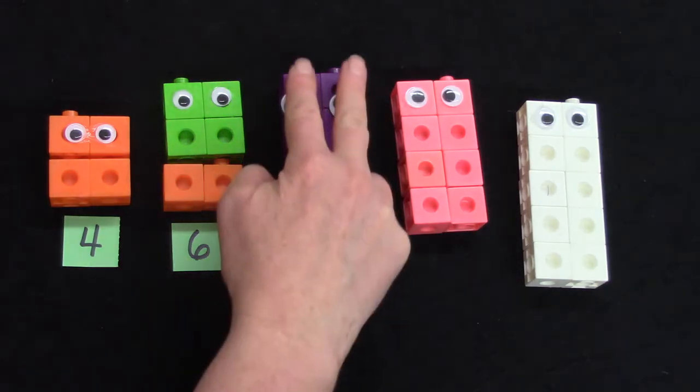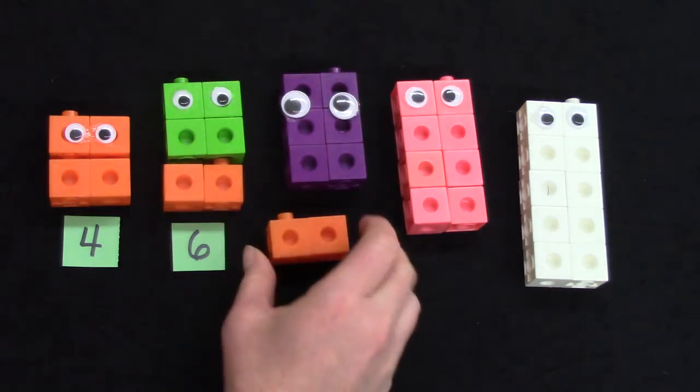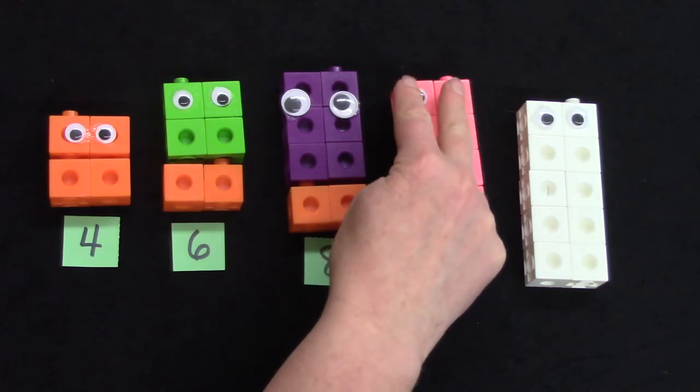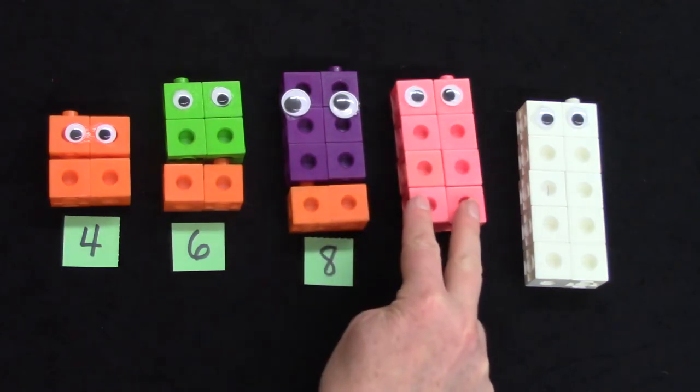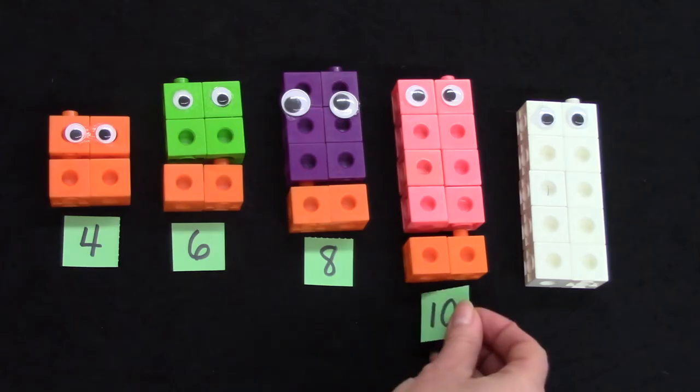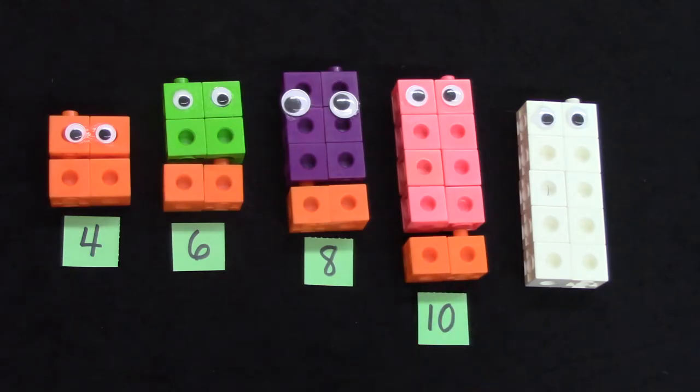If we have 2, 4, 6 and we add 2 more, we'll have 8 snap cubes. If we have 8, 2, 4, 6, 8, and we add 2 more, we have 10 snap cubes.